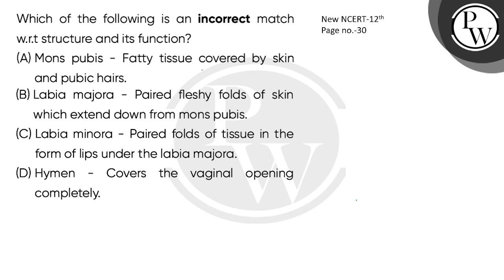Mons pubis — fatty tissue covered by skin and pubic hairs. This is correct. For female external genitalia, you can see mons pubis, labia majora, labia minora, hymen and clitoris. The mons pubis is a cushion of fatty tissue covered by skin and pubic hairs.